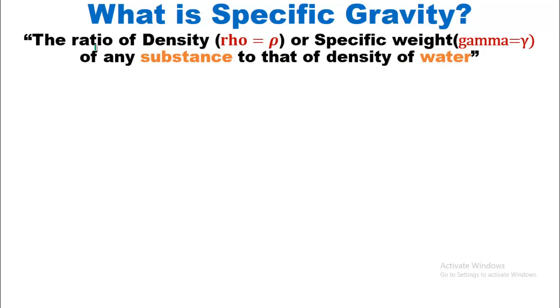First of all, let us define what is specific gravity. It is a ratio — the ratio of density, which is denoted by rho, or specific weight, which is denoted by gamma, of any substance to that of the density of water. So density plays the important role in this definition.